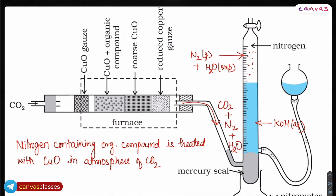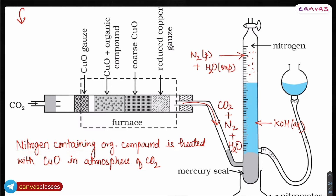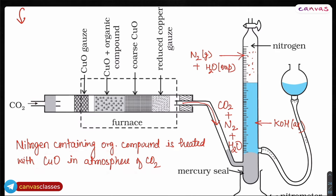So first, let us understand what happens in Dumas method. In this setup, carbon dioxide gas is coming from here. Copper oxide gauze is present here. The organic compound is heated with copper oxide. So simply remember: a nitrogen-containing organic compound is heated with copper oxide in an atmosphere of carbon dioxide. The nitrogen present in the organic compound will be converted into N₂, carbon dioxide will come out, and some water will also be formed.